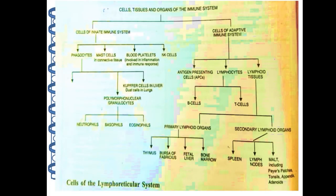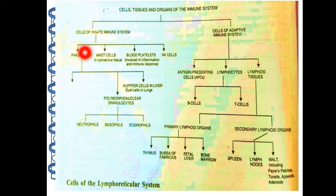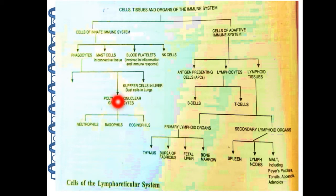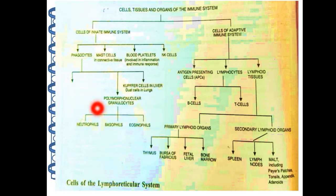See this chart showing the cells, tissues, and organs of the immune system. There are two types of immune system: first is the innate immune system and second is the adaptive immune system. Cells of the innate immune system, which are present naturally, are the phagocytes, mast cells, blood platelets, and natural killer cells. Phagocytes are further of different types: Kupffer cells in the liver, dust cells in the lung, and polymorphonuclear granulocytes such as neutrophils, basophils, and eosinophils, which are a type of white blood cells.